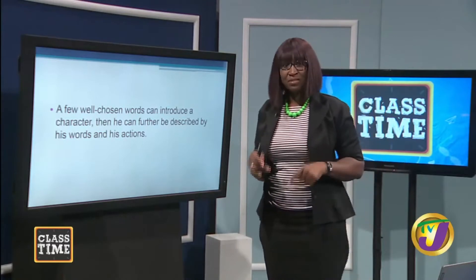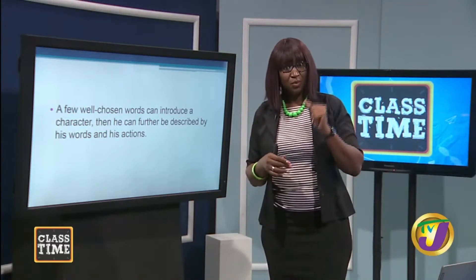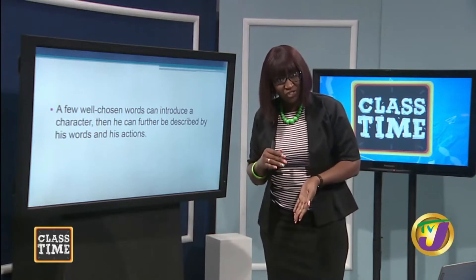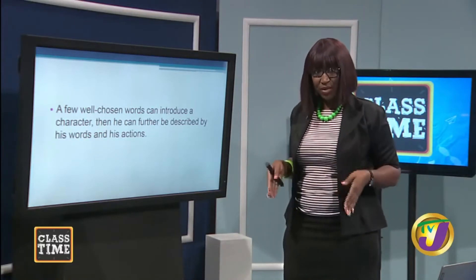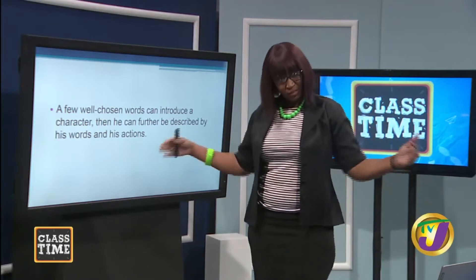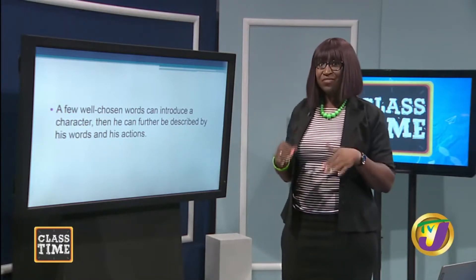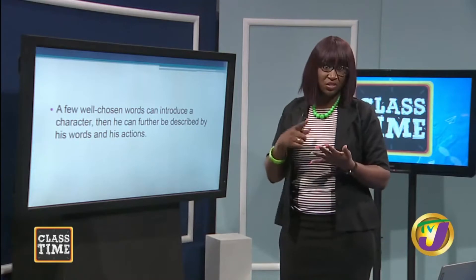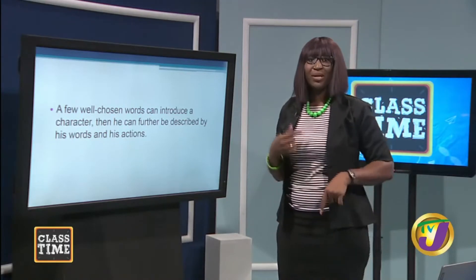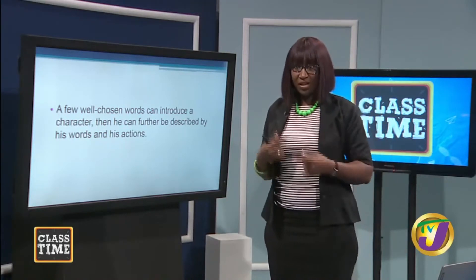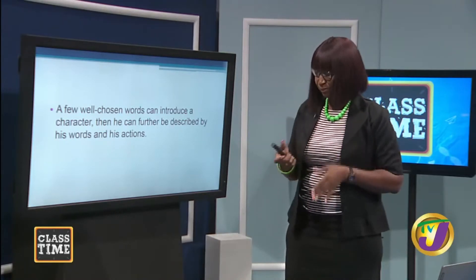If John Brown has to climb on a chair to reach something, we know he's vertically challenged. If he cannot pass between two desks, we know he's a little on the wide side. You don't have to tell us he's tall, short, slim, fat, brown, or black — you can bring out that description in how you tell what he's doing.